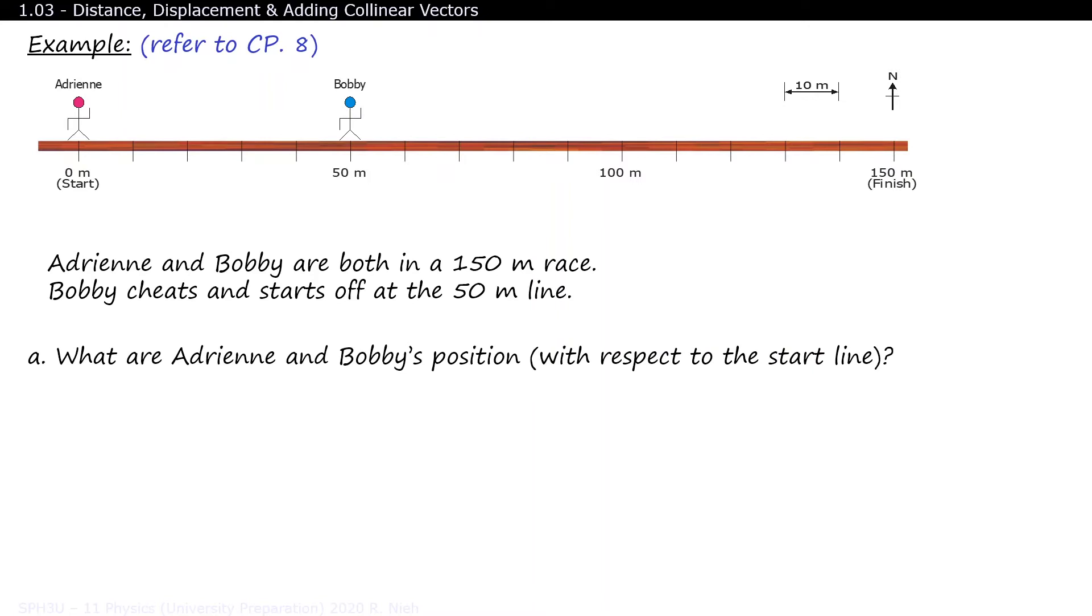Well, Adrian is already at the start line, so her position is at zero. To describe that this is an equation for Adrian, we'll include a letter A in subscript. Bobby on the other hand is 50 meters east of the start line, so his equation is written as D subscript B equals 50 meters east of start.